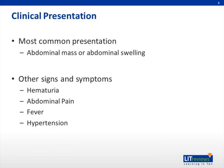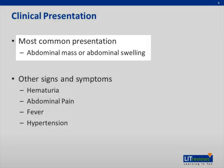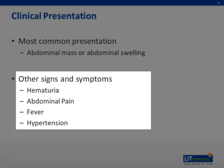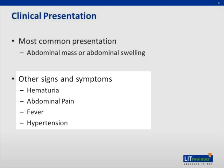The most common presentation of Wilms tumor is an abdominal mass or abdominal swelling that either the parents or the primary care doctor notice on physical exam. About 20% of the time, patients will present with hematuria, abdominal pain, fever, or hypertension. Very rarely, patients present with constitutional symptoms seen in other cancers, such as bone pain or weight loss.